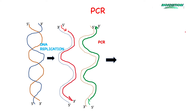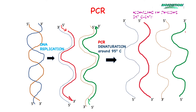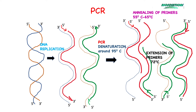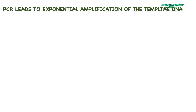A PCR reaction will have three basic steps of denaturation, annealing of primers, and extension of primers to make new DNA strands. Denaturation is critical to create a single-stranded template so that complementary primers can anneal to the template and can be extended by DNA polymerase to make a new DNA strand. This new DNA strand can be used as a template to create more new DNA strands and so on in multiple cycles of denaturation, annealing and extension.